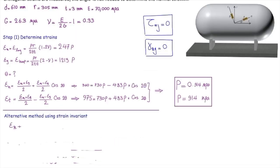We know that strains in two perpendicular directions are always constant. So epsilon x plus epsilon y equals epsilon n plus epsilon t. Epsilon x is 247p, epsilon y is 1213p, epsilon n and epsilon t are given. So there's just one unknown. And just with two lines of solution, I can determine how much is p.